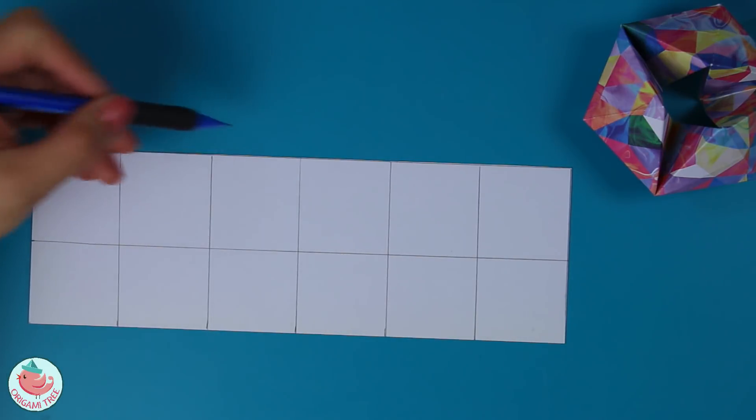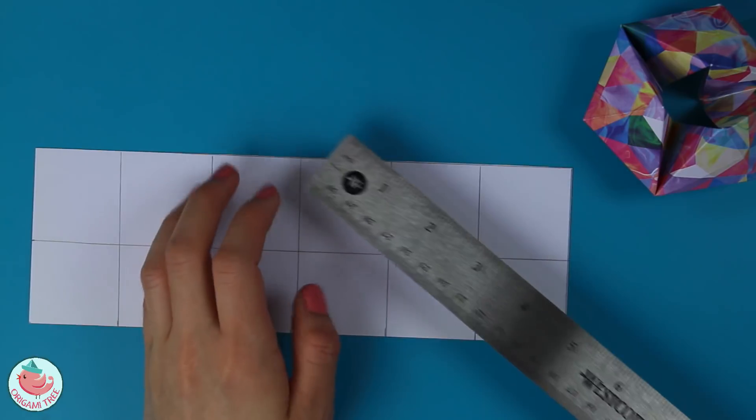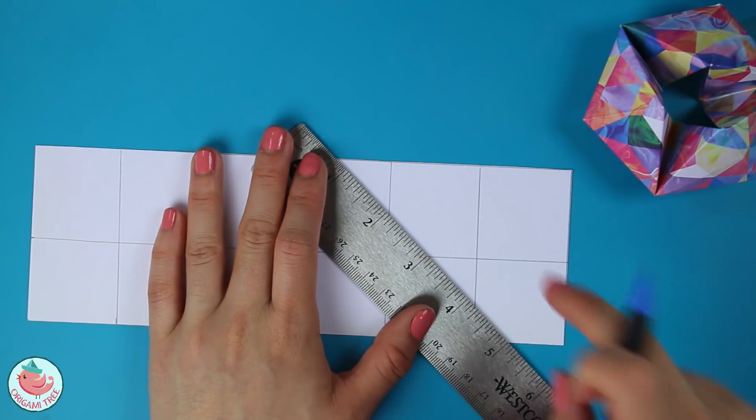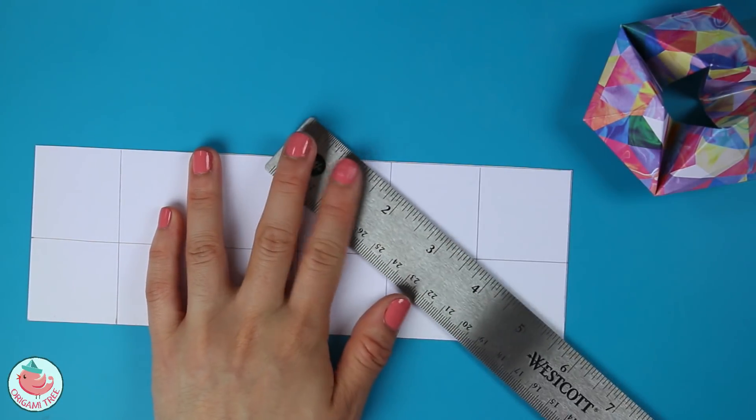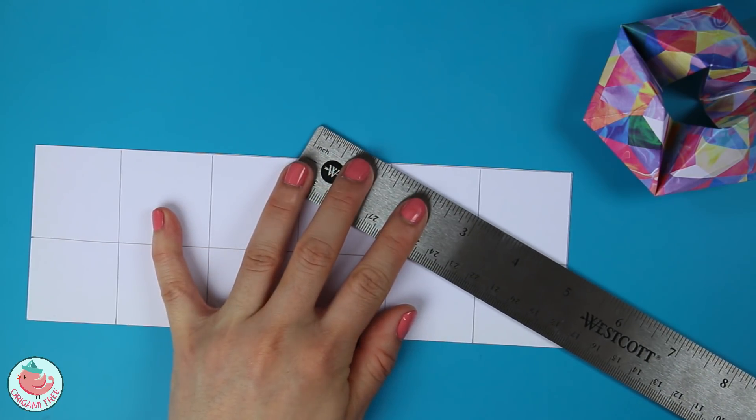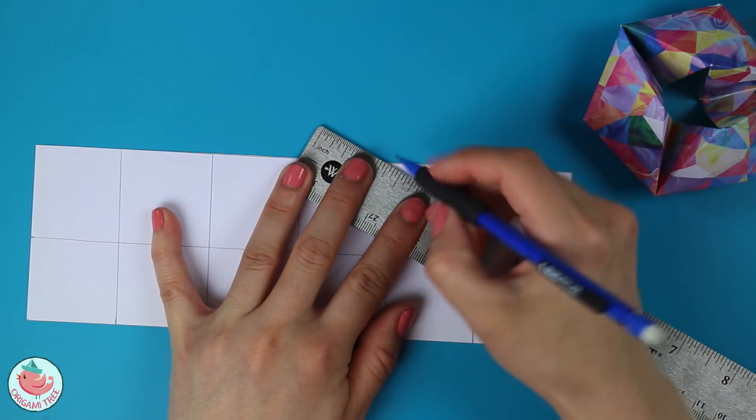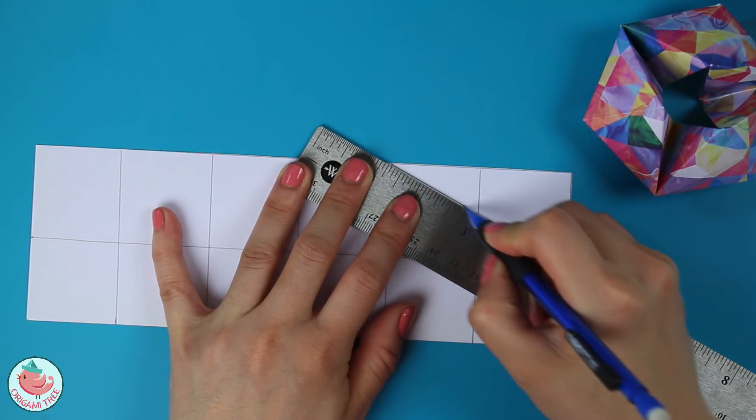So now we have a two by six grid of one and a half inch squares. Now we're going to draw our diagonal lines. And the first one I'm going to make is going to include these two squares right at the top right corner. So I'm going to align my ruler right over here and draw a diagonal line straight across.